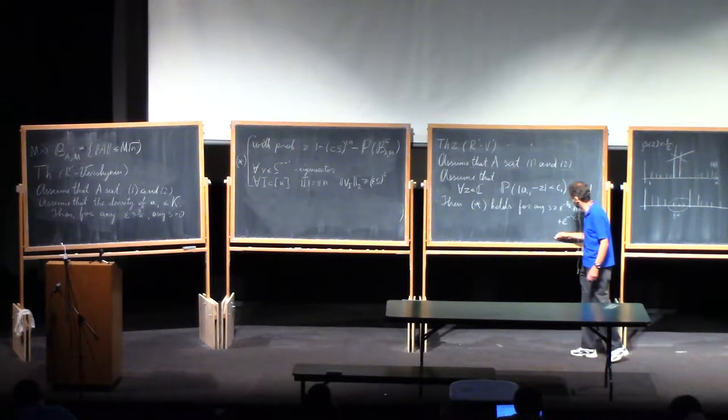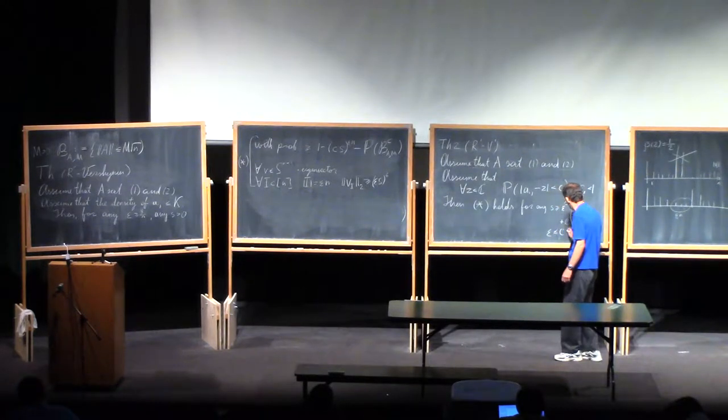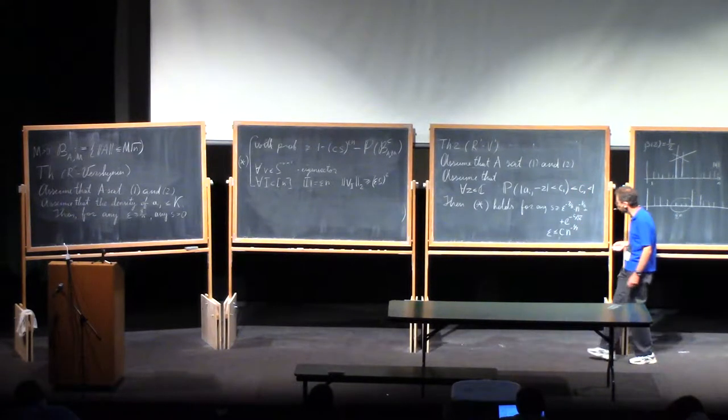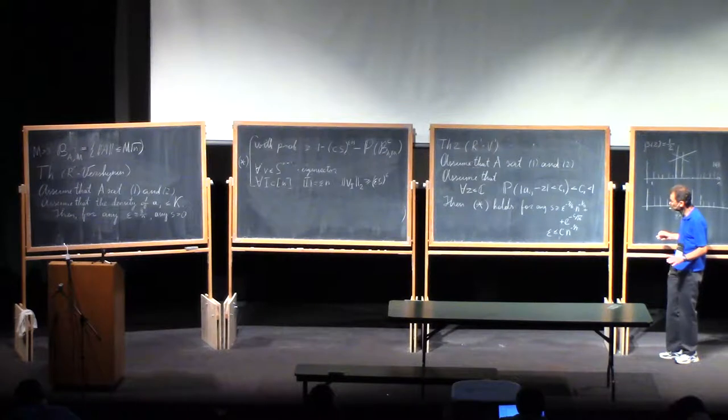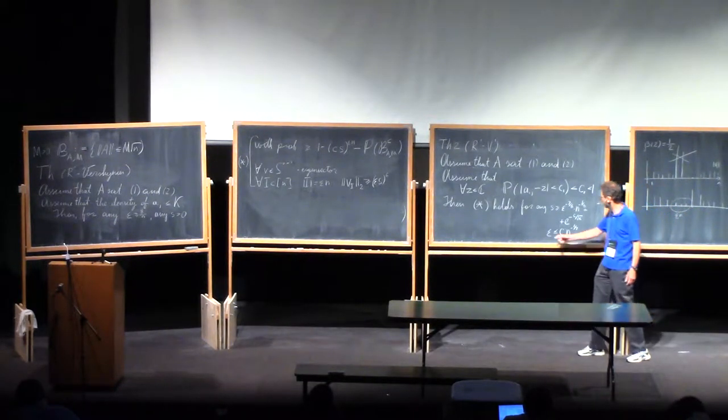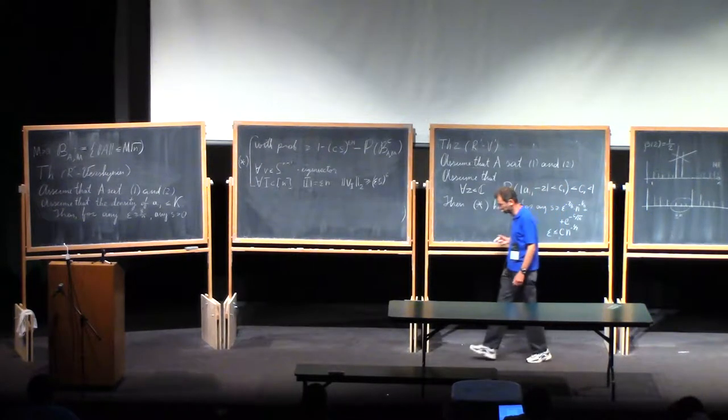This equation forces us to assume that epsilon is less than or equal to a constant times n to the negative one-seventh. So we cannot push it all the way down to one, but at least we can get epsilon being a power of n.